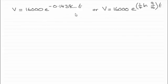You can have this version, or you can have the exact value of k here, 1 quarter natural log of 9 sixteenths, which as decimal is minus 0.1438 and so on.